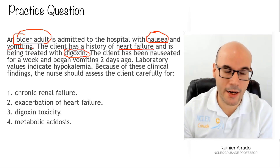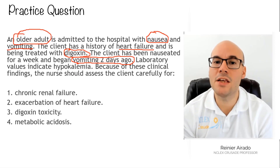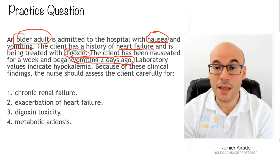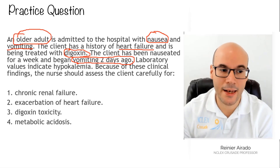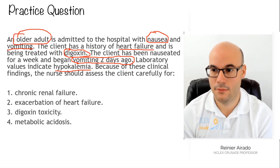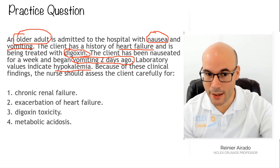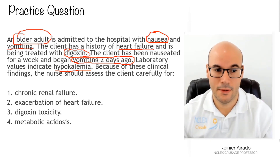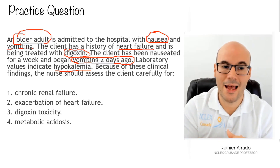The client has been nauseated for a week and began vomiting two days ago. Anytime you see objective, measurable information, this is important — two days ago means this patient has been vomiting for a while. Laboratory values indicate hypokalemia — another key factor. So we now have: elderly, vomiting, digoxin, and hypokalemia. Is there a relationship? Because of these clinical manifestations and findings, what should the nurse assess for?